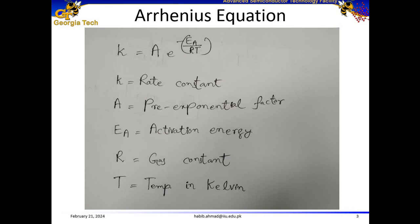The activation energy of dopants in semiconductors can be determined using the Arrhenius equation. Here is the generic form: K is equal to A times e to the power of minus Ea divided by RT, where K is the rate constant, A is the pre-exponential factor, Ea is the activation energy, R is the gas constant, and T is the temperature in Kelvin.